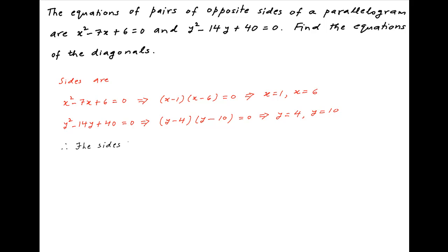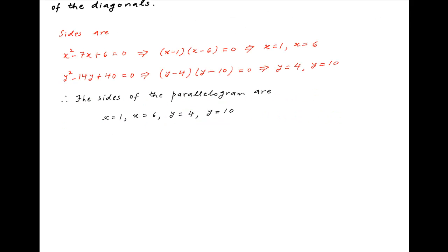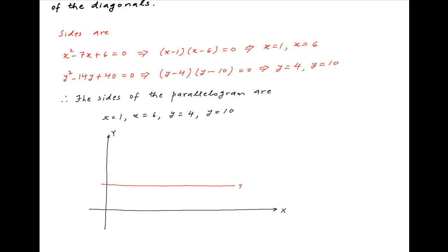Therefore, the four sides of the parallelogram are given by the equations x = 1, x = 6, y = 4, and y = 10. Now let's plot this information on the Cartesian plane. Two of the sides are the horizontal lines y = 4 and y = 10, and the other two sides are the vertical lines x = 1 and x = 6.